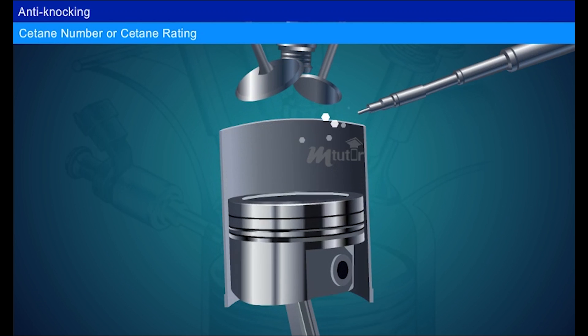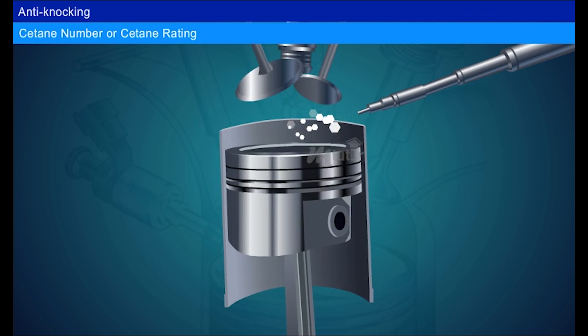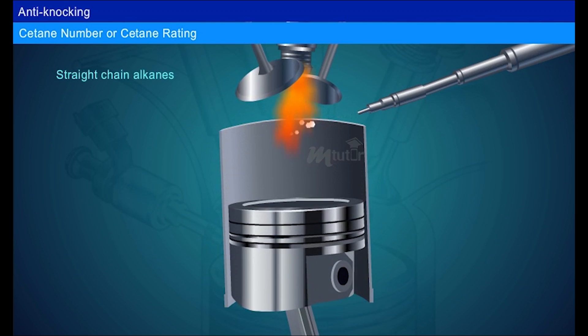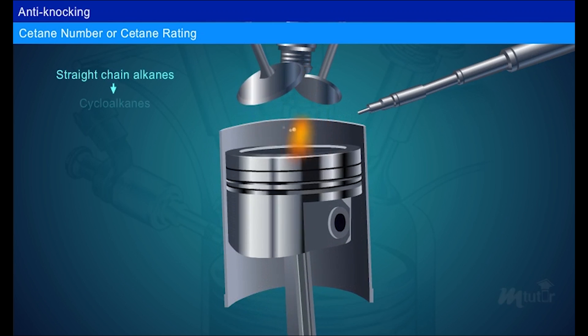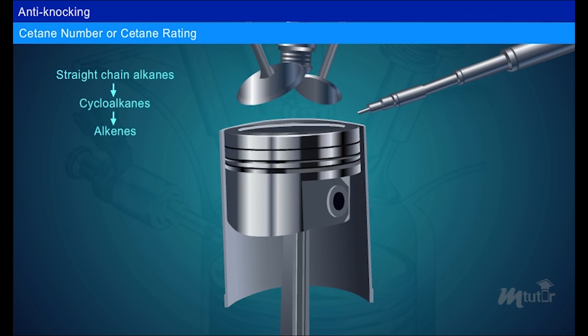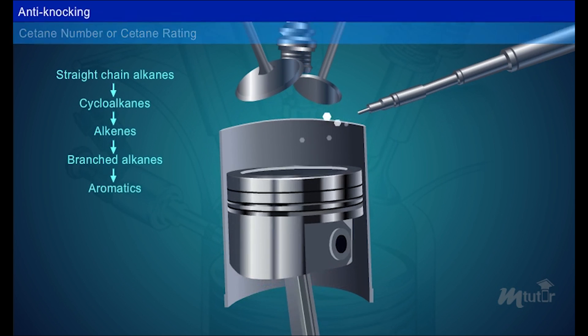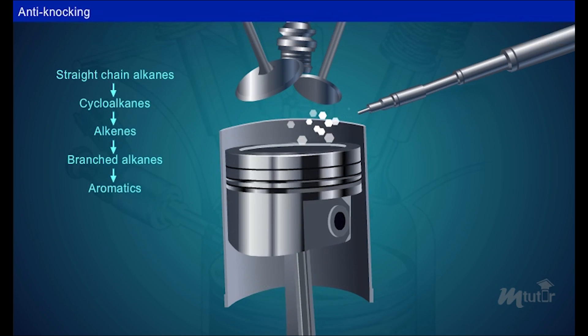The cetane number decreases in the following order: straight-chain alkanes, cycloalkanes, alkenes, branched alkanes, aromatics.